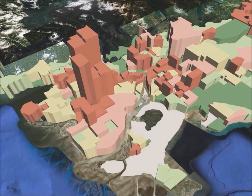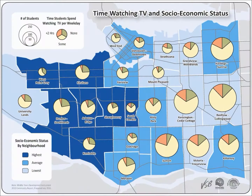The idea here is we're telling stories with data. We're making these data into something that you can attach yourself to and say, why are the poor parts of the city watching more TV? And the next map you'll see, we explored some more dimensions in the data to understand the contextual factors that influence children's development.